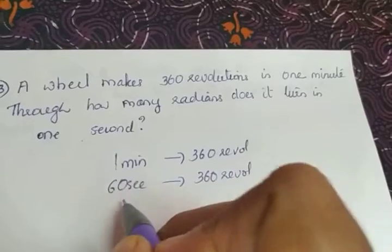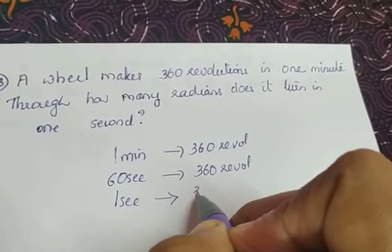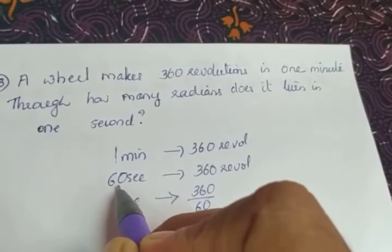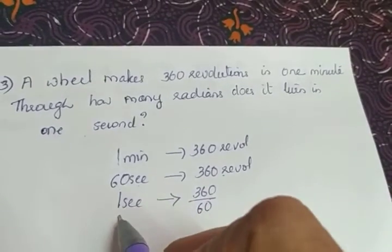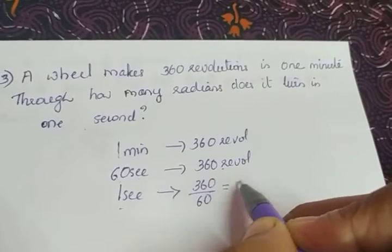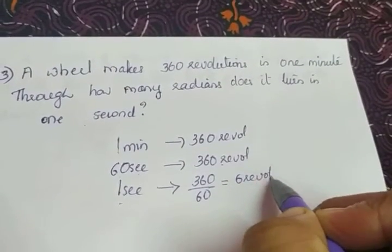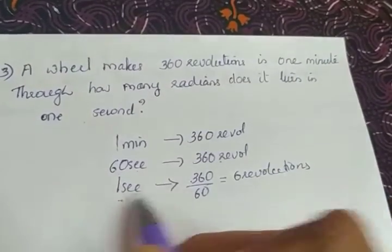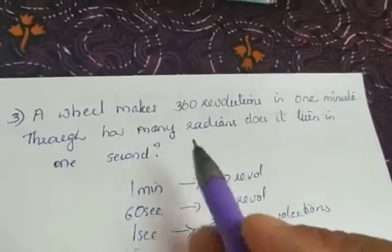We need the value in one second, so in one second it takes 360 divided by 60 revolutions — because for 60 seconds it revolves 360 times, so in one second it must revolve 360 by 60, which equals six revolutions. So in one second, the number of revolutions is six.